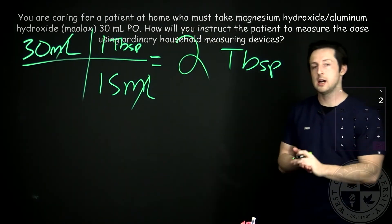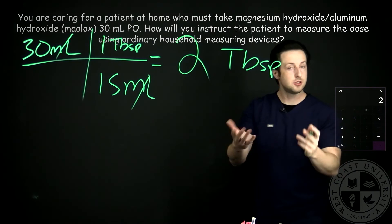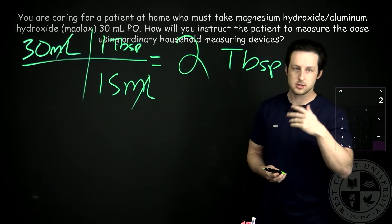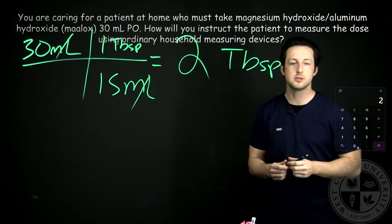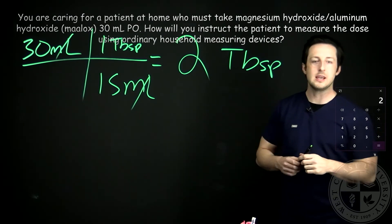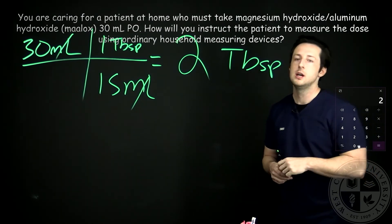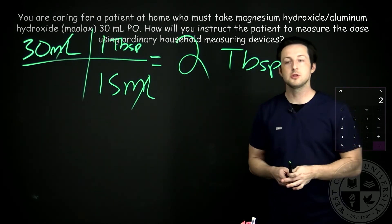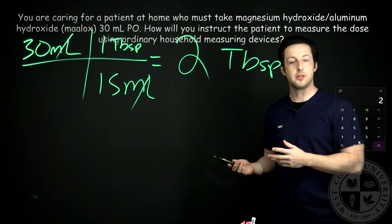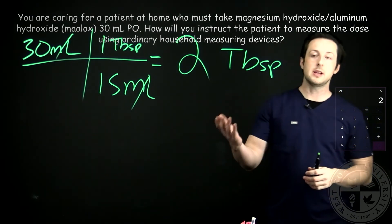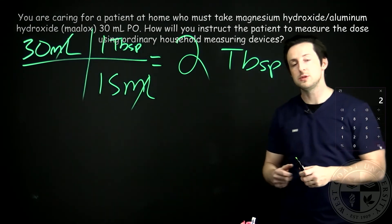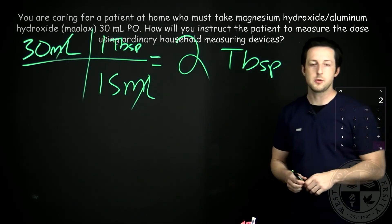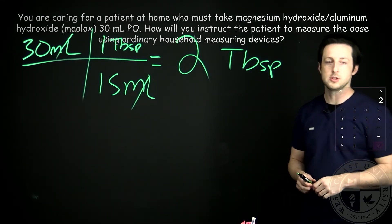So in this case, you would say: 'Mrs. Doe or Mr. Doe, you do have tablespoons at home, yes?' And they'll say yes, because that's how we measure most of our baking items. And you can say, 'Listen, there's 15 mLs per tablespoon, you're supposed to take 30, so for this medication I need you to take two tablespoons.' And that's how we would educate using MedMath.